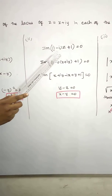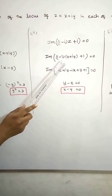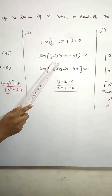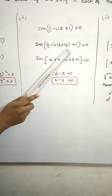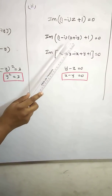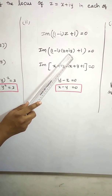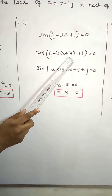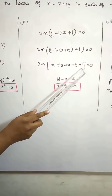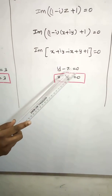Second subdivision: imaginary part of 1 minus i into z plus 1 equals 0. Substitute z equals x plus iy. Expanding 1 minus i into x plus iy plus 1: 1 into x is x, 1 into iy is iy, minus i into x is minus ix, and minus i into iy is minus i squared y equals plus y. Then plus 1 equals 0.